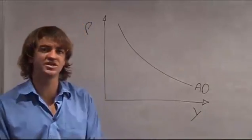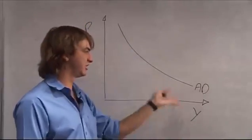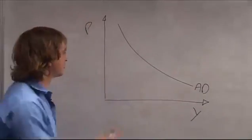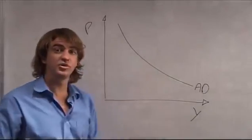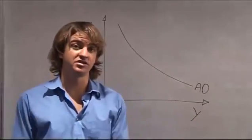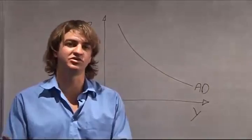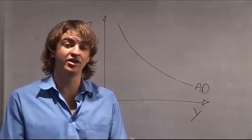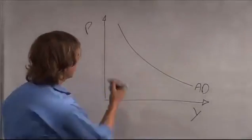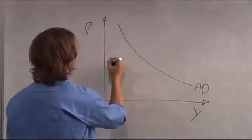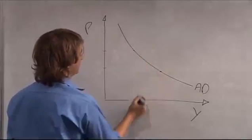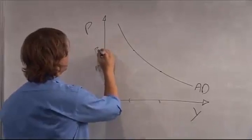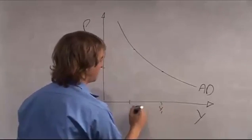The three effects that determine the downward sloping nature of the aggregate demand curve are: first, the real balances effect, which says that as the price increases, the purchasing power of everybody's savings on aggregate will decrease. Since the purchasing power of savings decreases, they're going to demand less output. So as price increases from P1 to P2, demand decreases from Y1 to Y2.